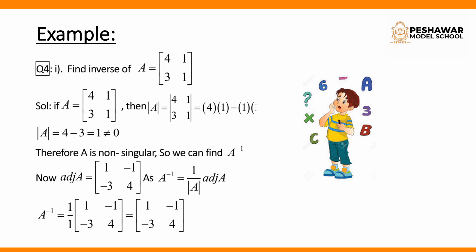First we find the determinant of matrix A. If it is not equal to 0, the matrix is non-singular and we can find the inverse. The determinant equals 1, which is not equal to 0, so A is non-singular. We then find the adjoint by interchanging the main diagonal and changing the signs of the second diagonal. Putting values into the formula, A inverse equals the matrix [1, -1; -3, 4].